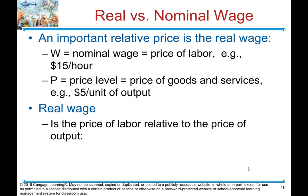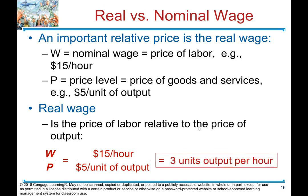An important relative price is the real wage. W is the nominal wage — the price of labor, e.g. $15 an hour. P is the price level — the price of goods and services, e.g. $5 per unit of output. Real wage is the price of labor relative to the price of output, measured as W over P: $15 an hour divided by $5 per unit of output equals 3 units of output per hour.